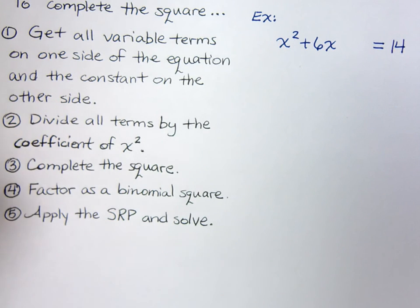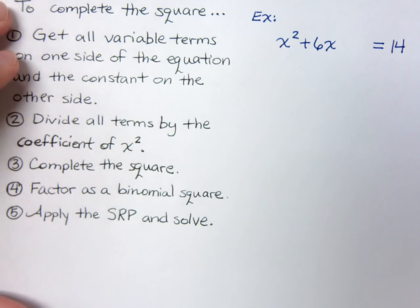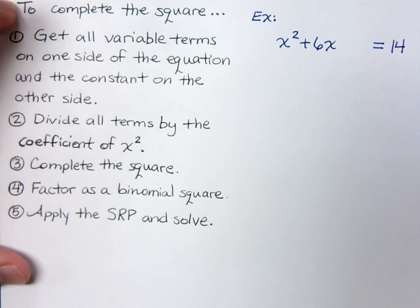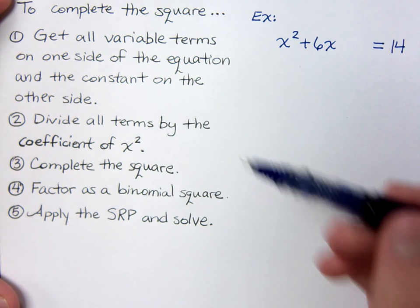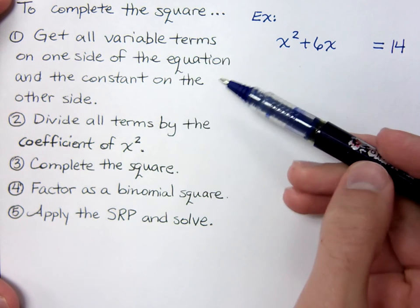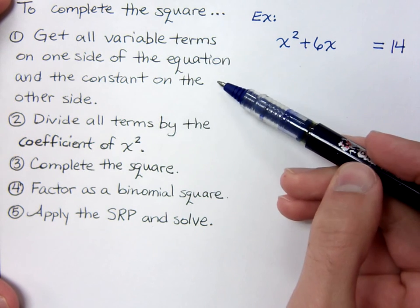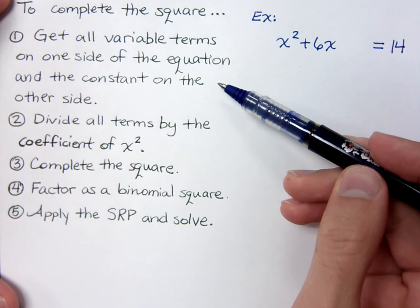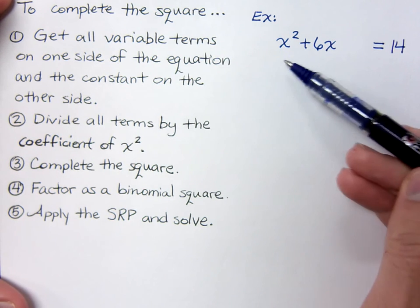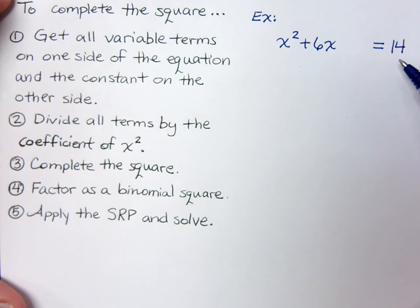In this video, we walk through the steps for solving an equation by completing the square. The first thing you want to do is get all variable terms to one side of the equation and use a constant on the other side. You'll notice here in this example that that's already set up for you.